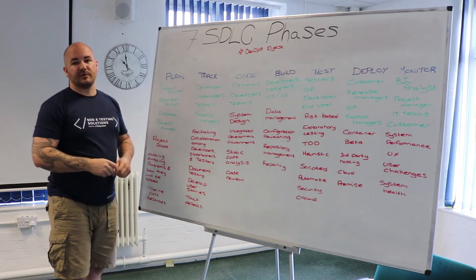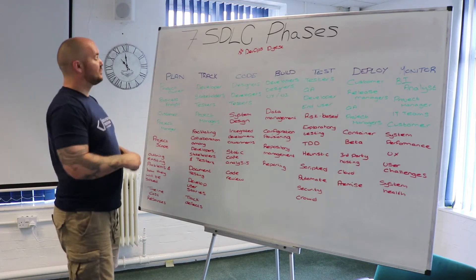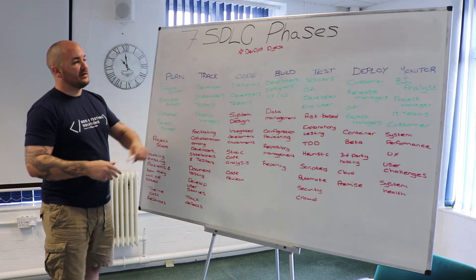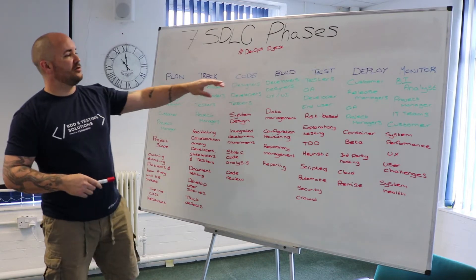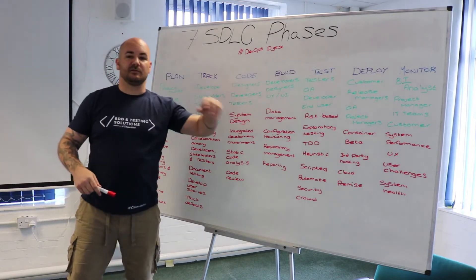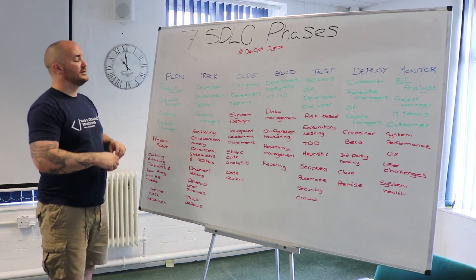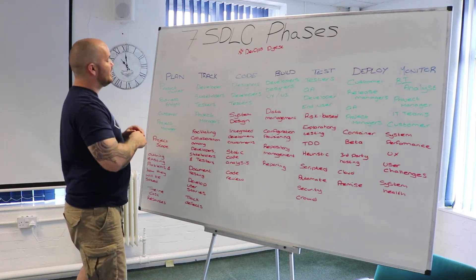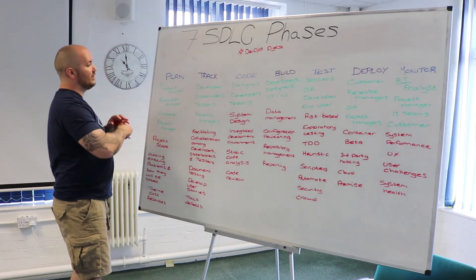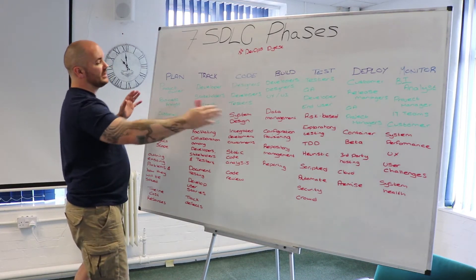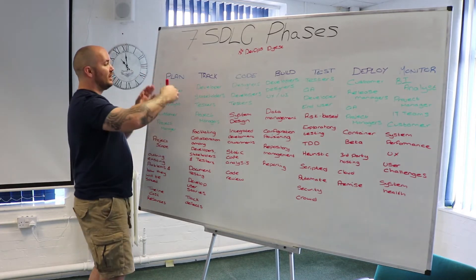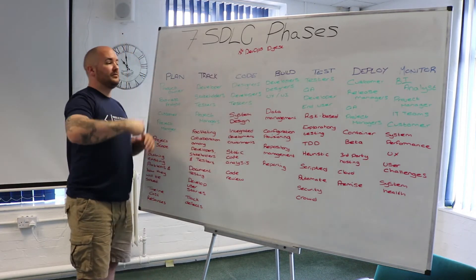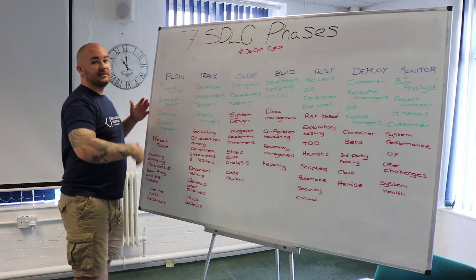Today is a high-level overview of what those DevOps practices and phases are going to be. The seven areas are: plan, track, code, build, test, deploy, and monitor. In the old days, we would regard this as a waterfall method — you go from one phase to the other, completing each phase before having to go back to the beginning if you need to start again.